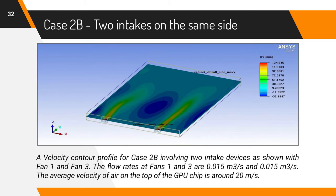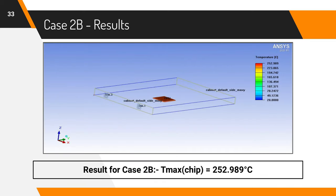Case 2B is similar to the previous one. We have two intakes instead of one intake and one exhaust. This gives velocity of about 20 m per second over the chip. Here, the chip temperature comes out to be around 250 degrees Celsius. Clearly, 2B is better than 2A. Now, we move on to add heat sinks to the system.